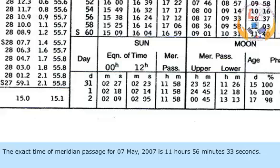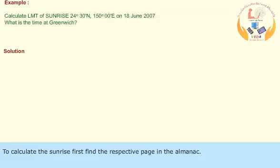The exact time of meridian passage for 7th May 2007 is 11 hours, 56 minutes, 33 seconds. To calculate the sunrise, first find the respective page in the almanac.